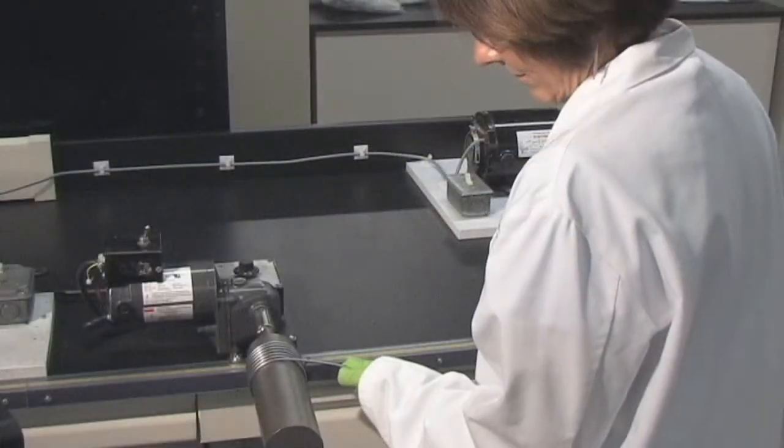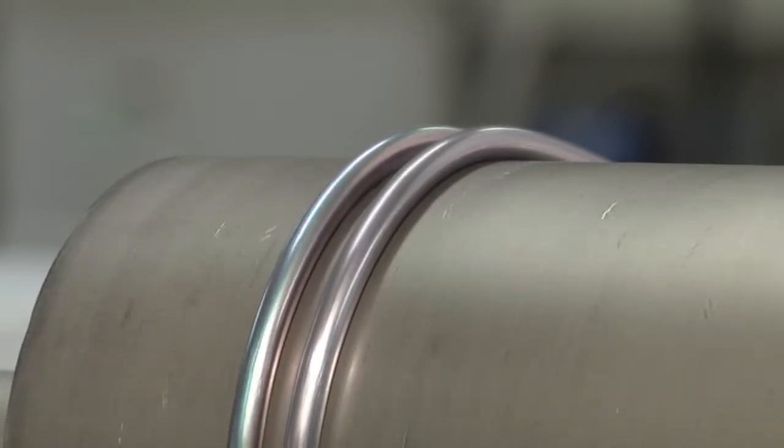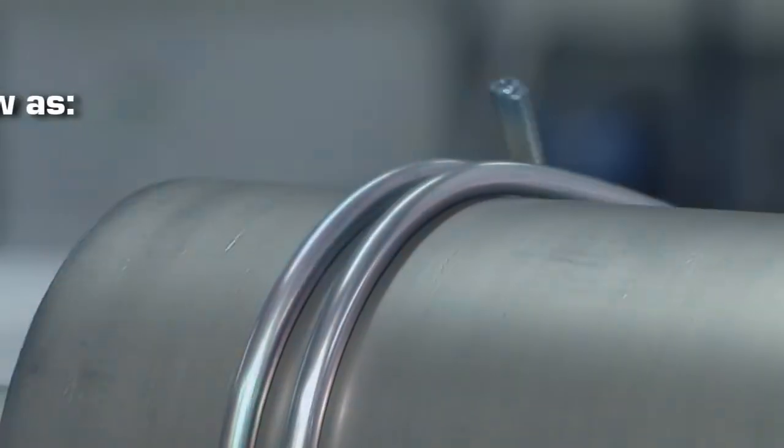This analyst is coiling a 1/4 inch silcoed tube on a 4 inch diameter mandrel. Even under extreme stress, the coating remains intact.